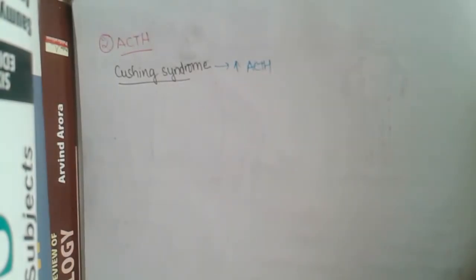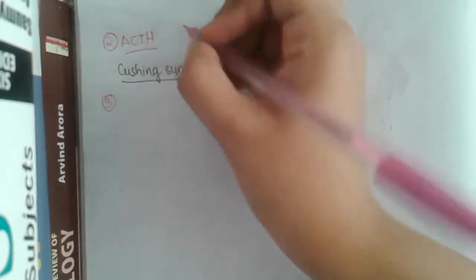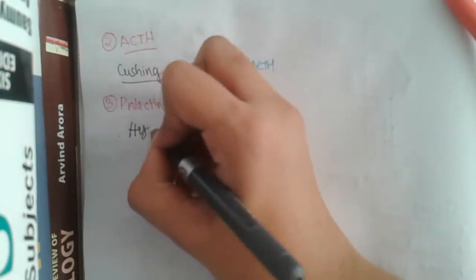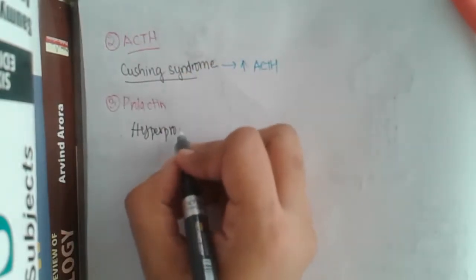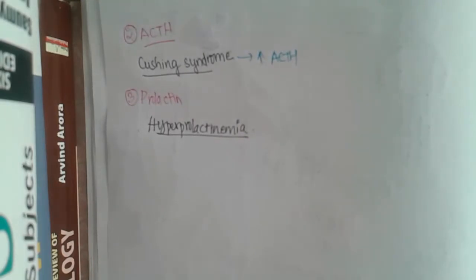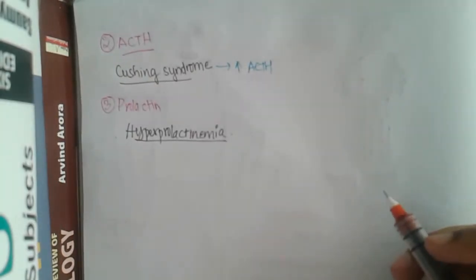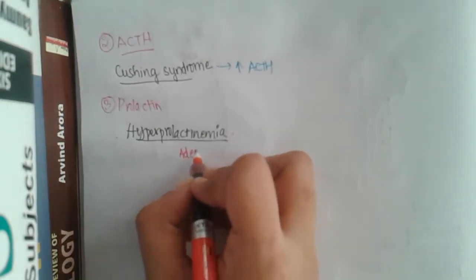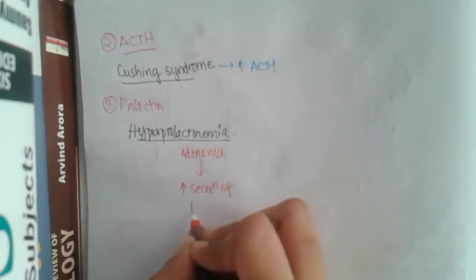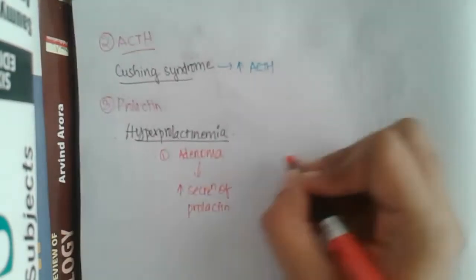The third hormone secreted by the pituitary gland is prolactin. Prolactin leads to a problem called hyperprolactinemia, where there is increased production of prolactin. One condition causing this is adenomas, which directly increase prolactin secretion from the pituitary.